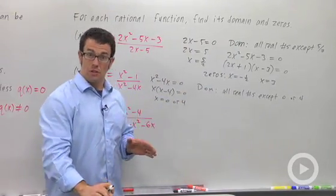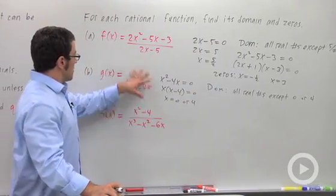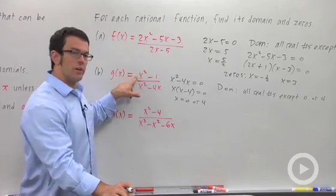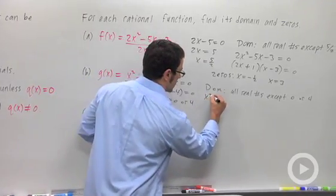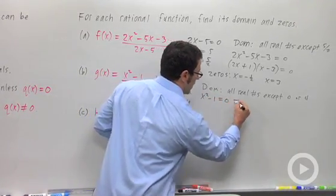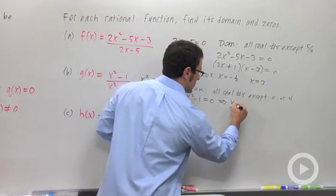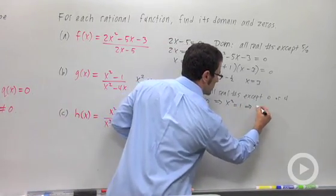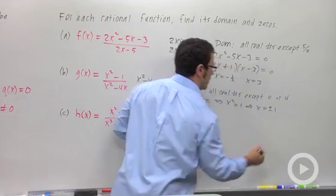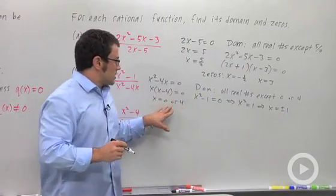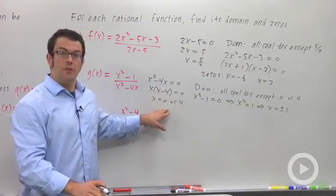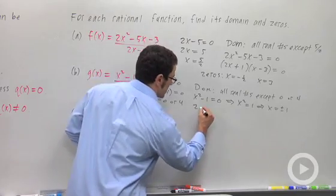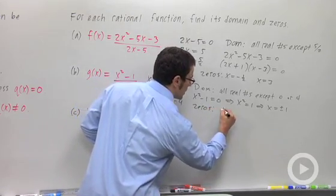Now, for the zeros of the function, the numbers that make this function 0, we look to the numerator. x squared minus 1 equals 0. And that's really easy. x squared equals 1. x equals plus or minus 1. So as long as plus or minus 1 are not also zeros of the denominator, these are zeros of my function. So the zeros are plus and minus 1.